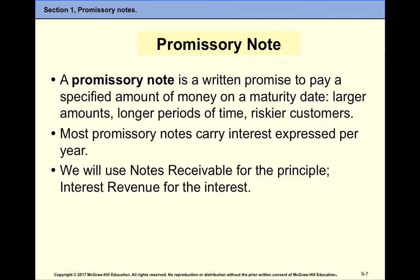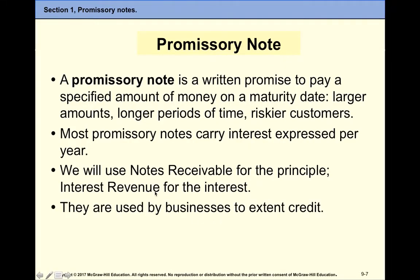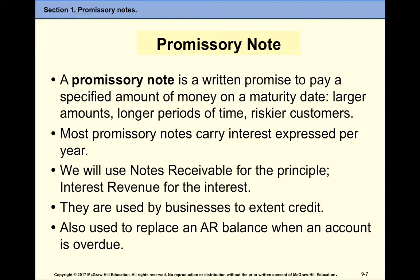The account connected to promissory notes is called Notes Receivable for the principal. For the interest that we earn, we will use the account called Interest Revenue. Notes Receivable is an asset; Interest Revenue is revenue. We will often use it when the customer has an accounts receivable — they purchased from us on account, let's say for 30 days. At the end of 30 days, the customer doesn't have money to pay us, so we give them an extension of credit — let's say four more months — and transfer their balance from AR into the note. But now, for the additional four months, we're going to start charging them interest. So we replace an existing accounts receivable with a note receivable.